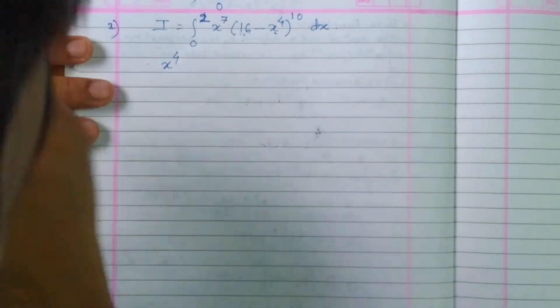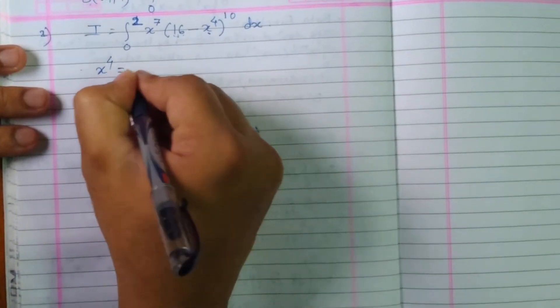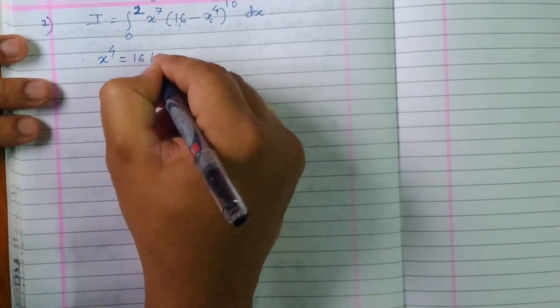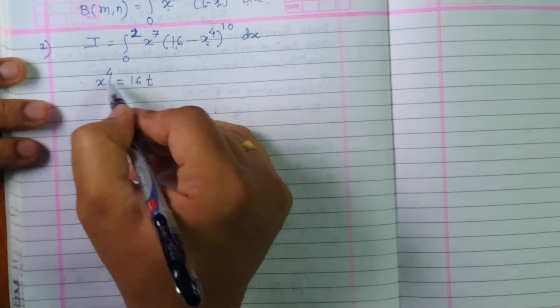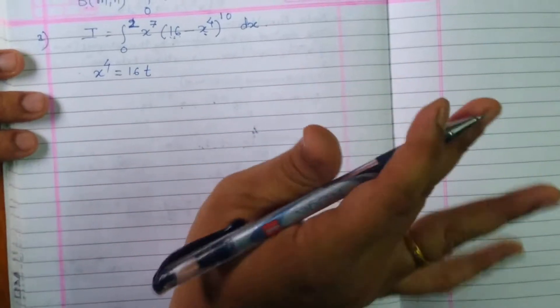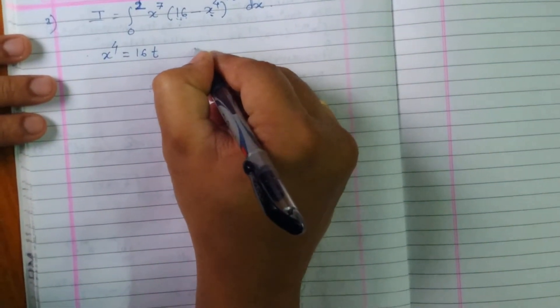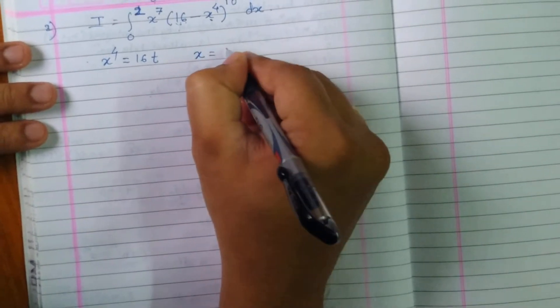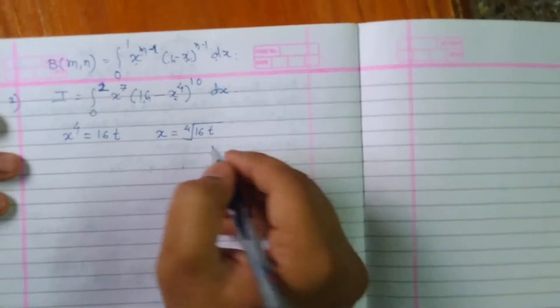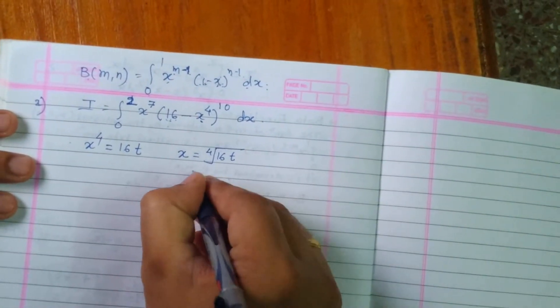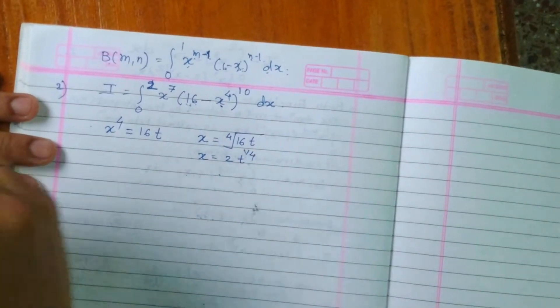So our substitution should be in the same fashion. We want to replace x raised to 4. We will replace it by multiples of 16, that is 16 times t. Now x raised to 4 equals 16t, so x equals the 4th root of 16t. Since the 4th root of 16 is 2, we can write x equals 2 times t raised to 1 by 4.